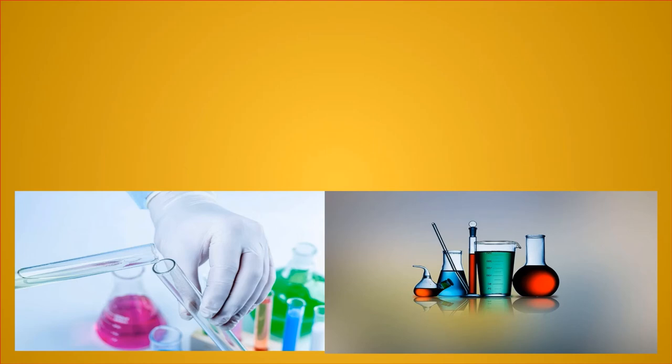In today's lecture, we have studied the occurrence and importance of the sugar industry, as well as some steps involved in the manufacture of cane sugar from sugarcane, including raw materials, extraction of juice, and harvesting of sugarcane. In the next lecture, we will study the remaining steps involved in the manufacture of cane sugar from sugarcane. Thank you.